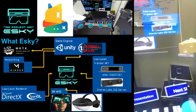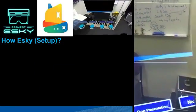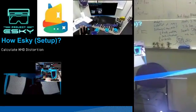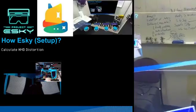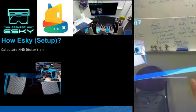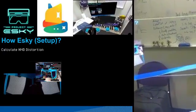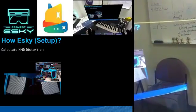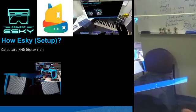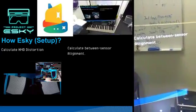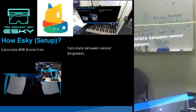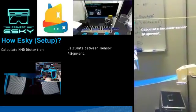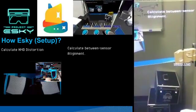Moving on to how Esky - let's go with the setup. First, we need to calculate the HMD's distortion. Any lens distortion system will not be able to render straight lines without undistortion. We use a simplified structured light homography mapping system to calculate the distortion of the lenses which projects the view into the real world. We then combine this with a calculation of between-sensors alignment.